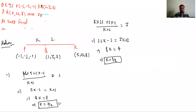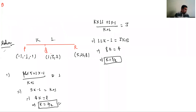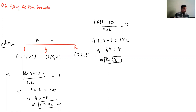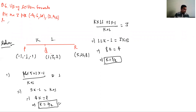Agle question mein aajao. Question number 6: Using Section Formula, prove that the three points (-4, 6, 10), (2, 4, 6), and (14, 0, -2) are collinear.